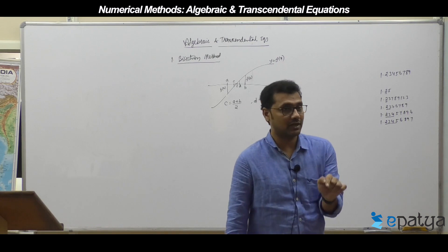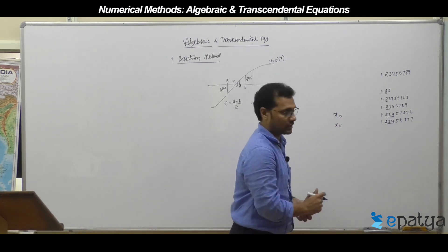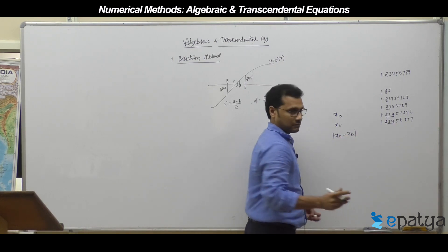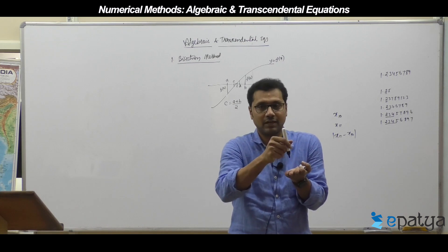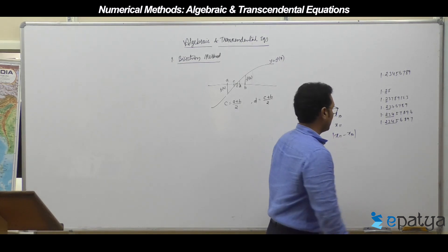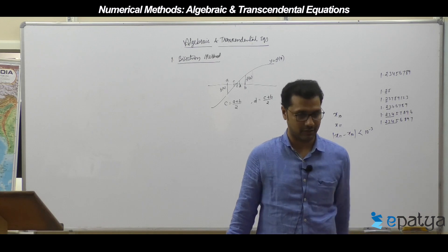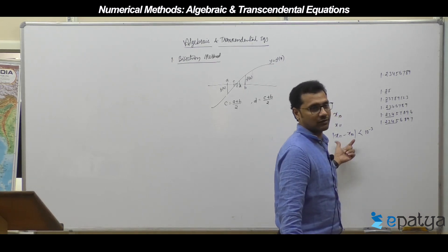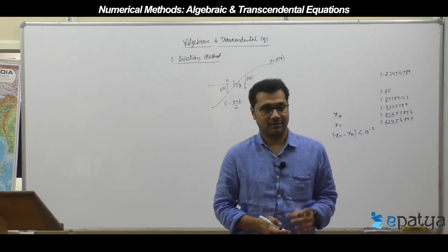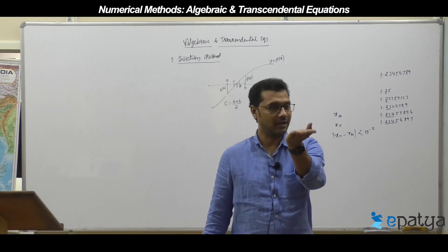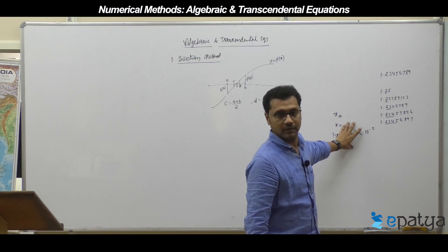So if at the 10th iteration and 11th iteration, the modulus of x11 minus x10 is less than 10 to the power minus 3, you already have accuracy. Take the modulus because the value may be approaching from below or above. If the question requires 5 decimal places, check whether that modulus is less than 10 to the power minus 5; if yes, optimality is reached, otherwise continue iterating. This check mechanism goes into your algorithm and flowchart.